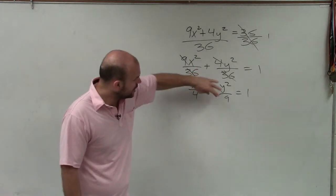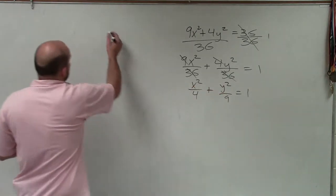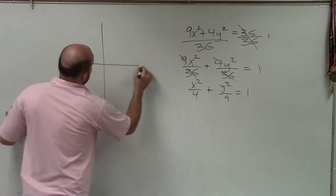So the larger number is going to be our a. And when our a is under our y², we know that our major axis is going to be vertical.